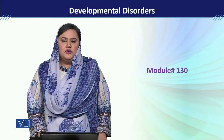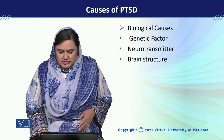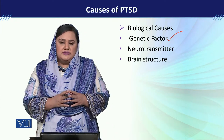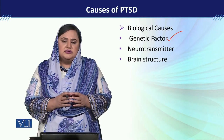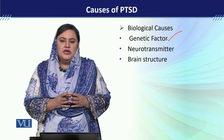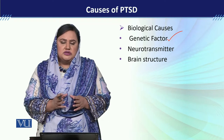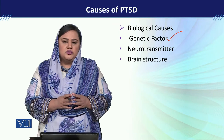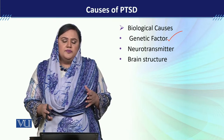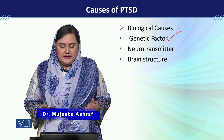Module 130 covers the causes of PTSD. We will first discuss biological causes. The first factor is the genetic factor. Genetically, it is said that there are families in which stress handling is limited, and the genes involved in limited stress handling are transmitted from one generation to another. Identical twins are an example — if one identical twin has PTSD, it is more likely that the other will also develop PTSD.